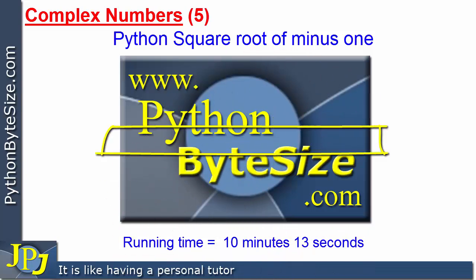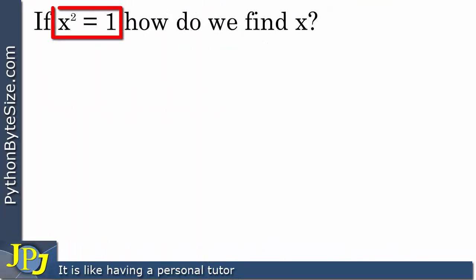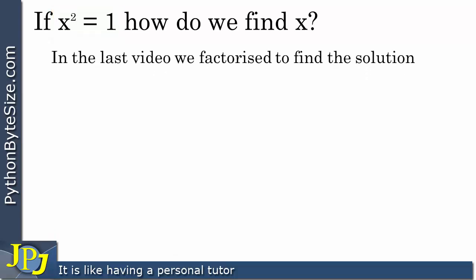In this video, I'm going to consider the square root of minus 1 and how the math module in Python deals with the attempt to take the square root of minus 1. This is something we've considered earlier in the playlist — x squared equals 1 and how we find the value of x that would satisfy this. In the last video, we factorized to find the solution. In this video, I'm going to take the square root of both sides.